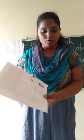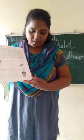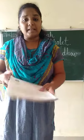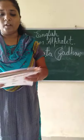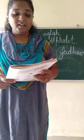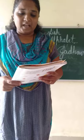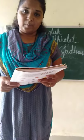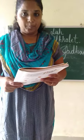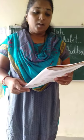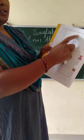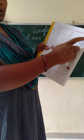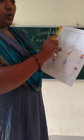Now we are going to see page number 6: write the names of these animals in alphabetical order. Here the animals written are lion, dog, and goat.